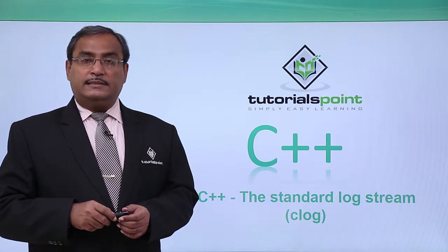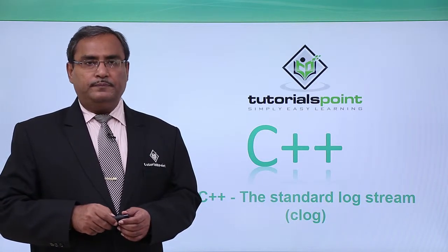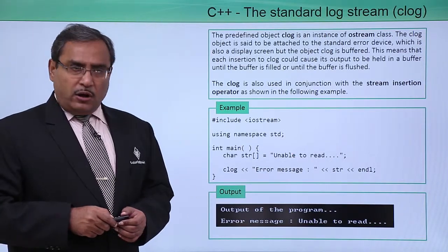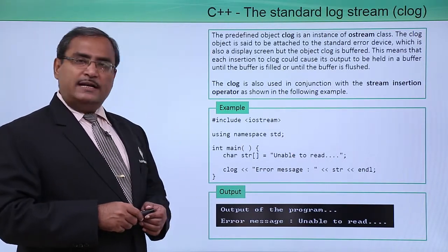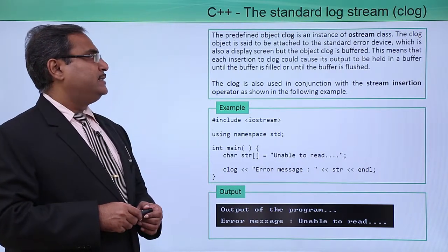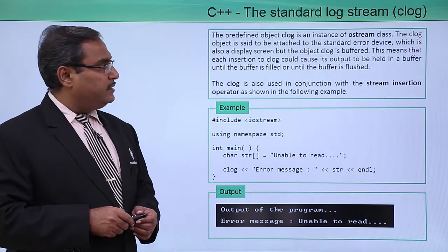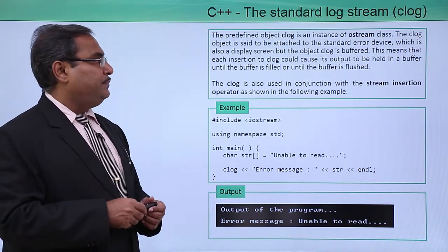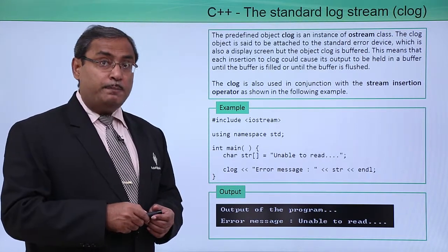C++ the standard log stream, clog. The predefined object clog is an instance of ostream class. The clog object is attached to the standard error device, which is also a display screen, but the object clog is buffered.